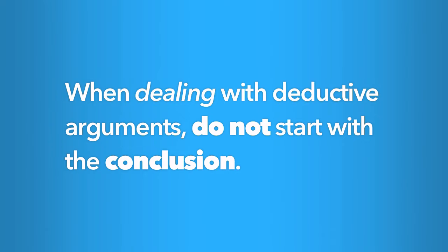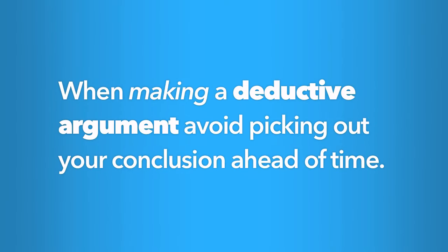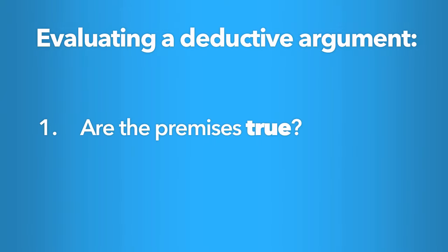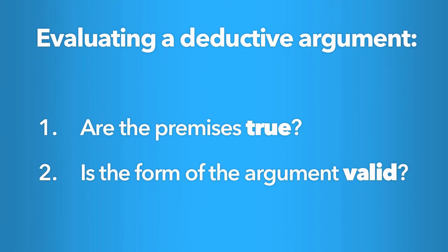Any time you are dealing with deductive arguments, whether evaluating an argument someone else has made or constructing your own, you shouldn't start with the conclusion. When you evaluate someone else's argument, avoid jumping to the conclusion right away without consideration of the argument as a whole. Similarly, when you make your own argument, avoid picking out your conclusion ahead of time and then finding ways to justify it. Instead, start by examining the premises — the reasons and evidence — then follow where those premises lead. So when you evaluate a deductive argument, you need to ask two questions: one, are the premises true, and two, is the form of the argument valid? If the answer to both questions is yes, then you have a sound argument.